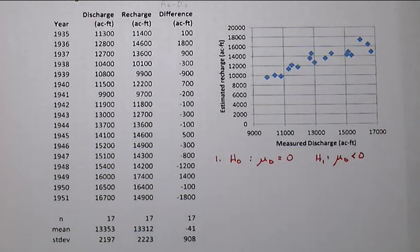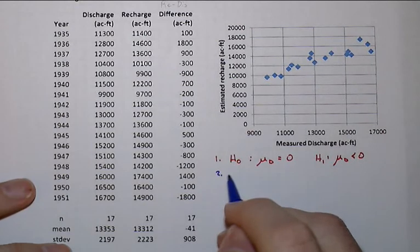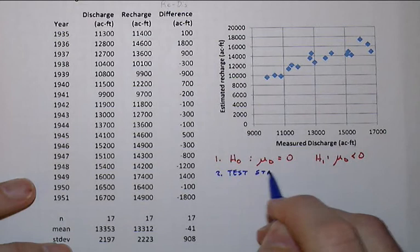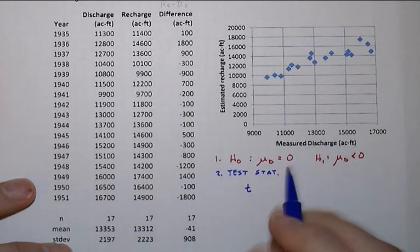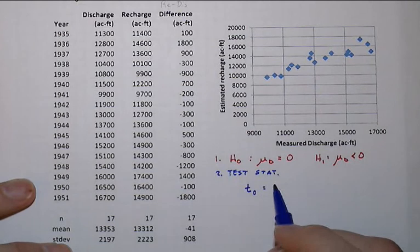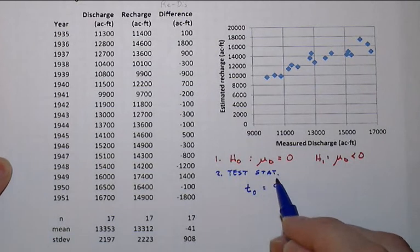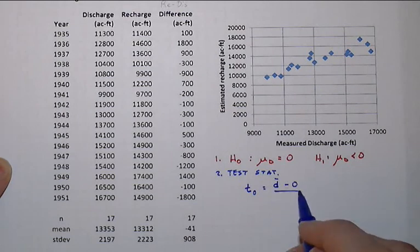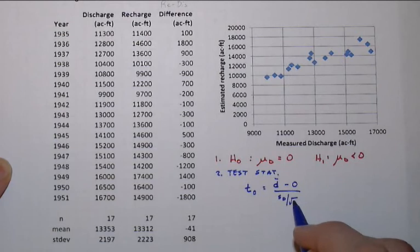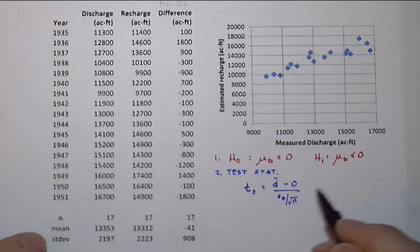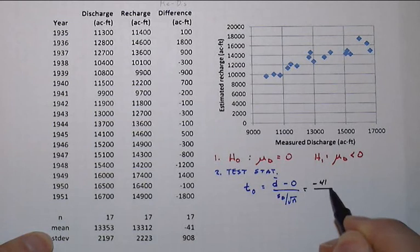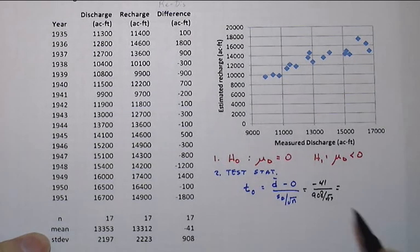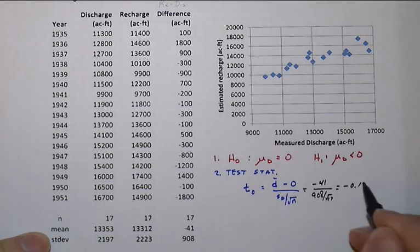So the statistic that we're going to look at is, once again, our t-distribution, and that would be our average difference minus, of course, the null value, which is 0 in this case, divided by sd divided by square root of n. So that would be negative 41 divided by 908 divided by square root of 17 for 17 years' worth of data. And we get minus 0.186.